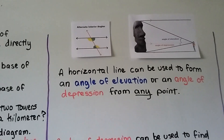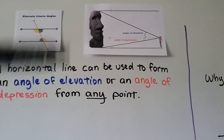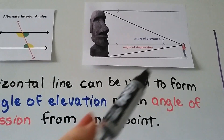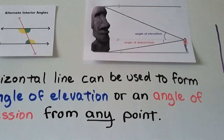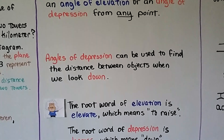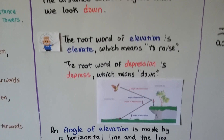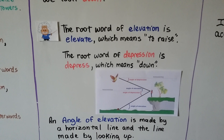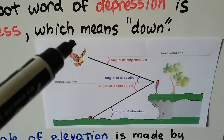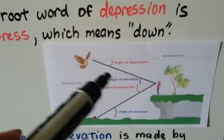A horizontal line can be used to form an angle of elevation or an angle of depression from any point. Looking at the statue example, looking up to the top is the angle of elevation, and looking down to the base is the angle of depression. The root word of elevation is elevate, which means to raise, and the root word of depression is depress, which means down. If the bird is looking down, that's the angle of depression; if she's looking up at the bird from the horizontal line, that area is the angle of elevation.